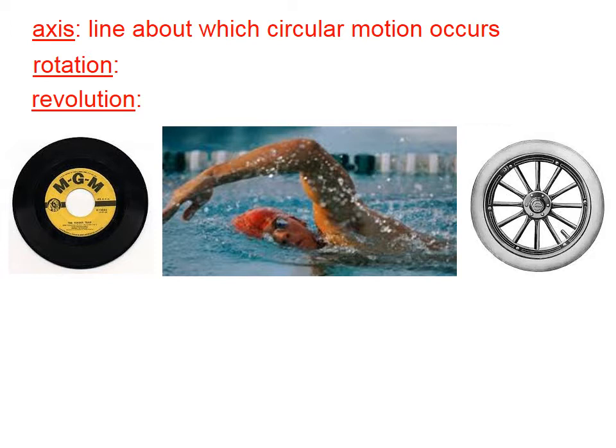In these pictures here, this record has an axis right in the middle. This wheel has an axis, which we call an axle. For the swimmer, the axis is somewhere around the shoulder — the line about which circular motion occurs.